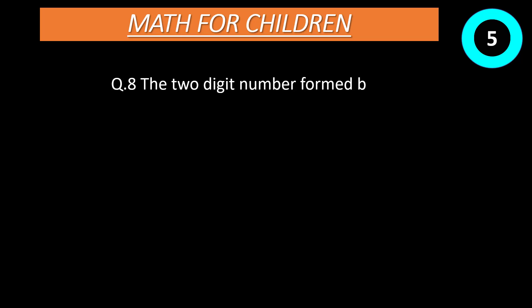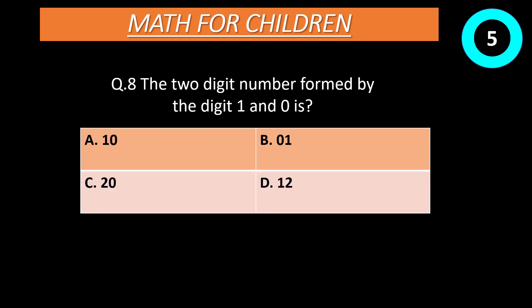Question number 8: The two digit number formed by the digit 1 and 0 is? Option A: 10. Option B: 01. Option C: 20. Option D: 12. Time start now. Correct answer is A, 10.